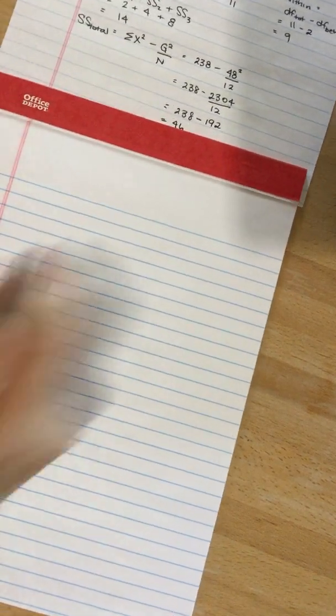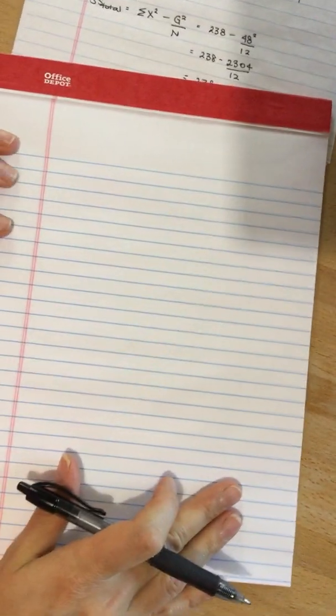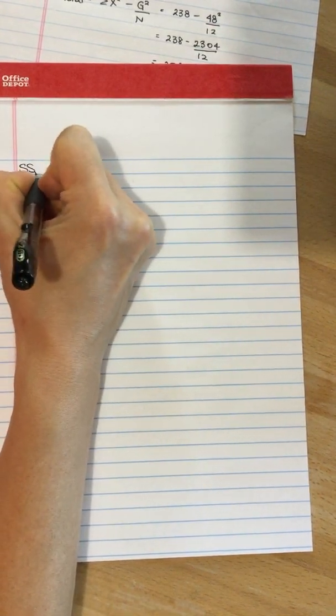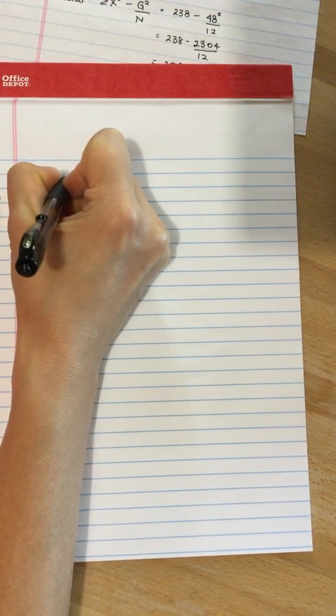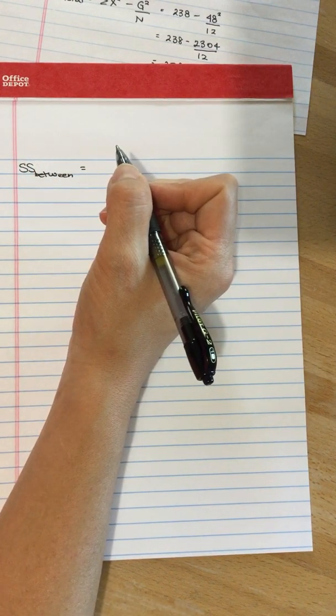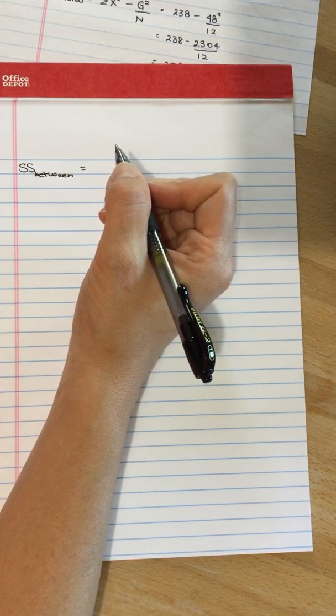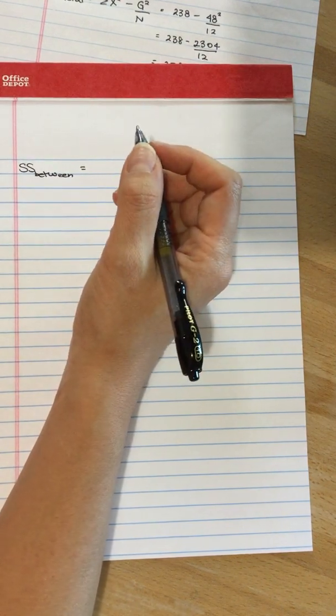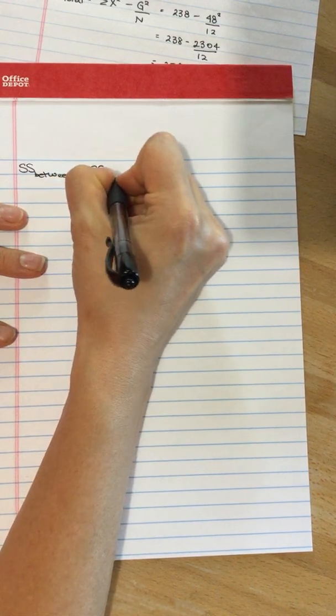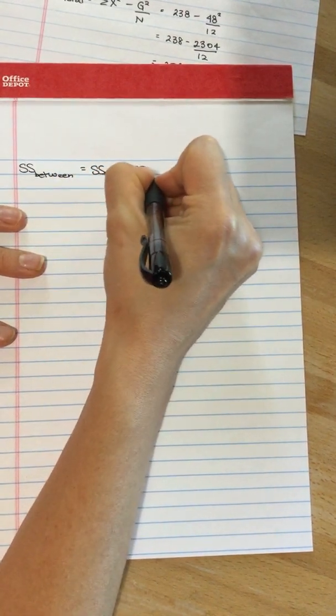I'm going to move this out of the way, but I'm going to come back to that summary table. So, the sum of squares between, well, there's an easy way to calculate it and there's a harder way to calculate it. And just so you have an example of the harder way, because sometimes you have to use the harder way, I'm going to do it both. Sum of squares between is sum of squares total subtract sum of squares within.